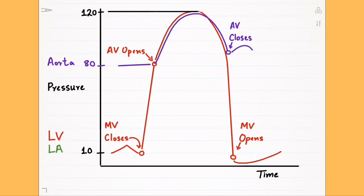Instead, the aortic pressure stays up around 80 to 90 millimeters of mercury. Closure of the aortic valve produces a sharp dip in the aortic pressure curve called the dicrotic notch. This will come in handy when we talk about the pressure curve in aortic regurgitation.